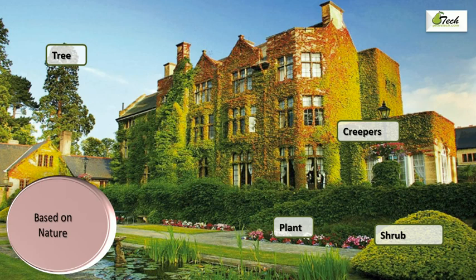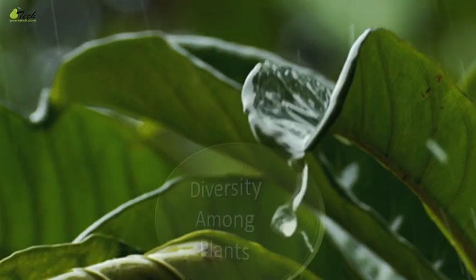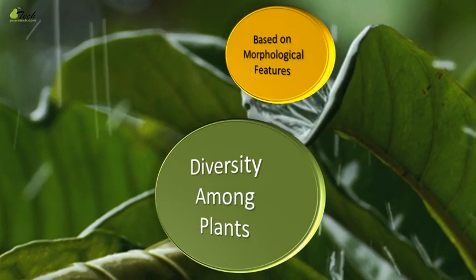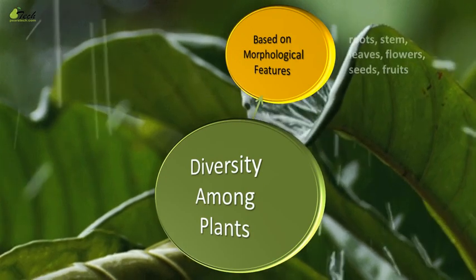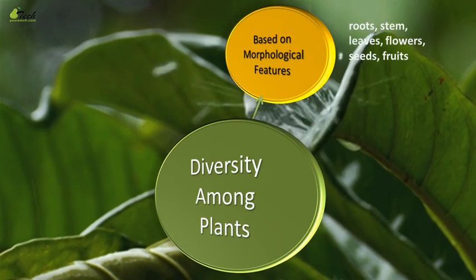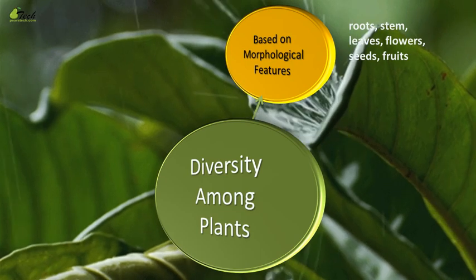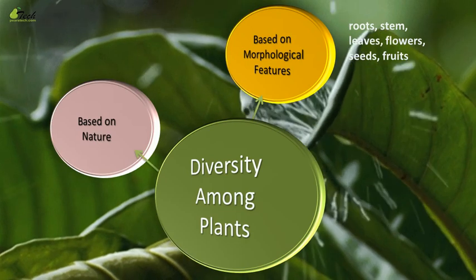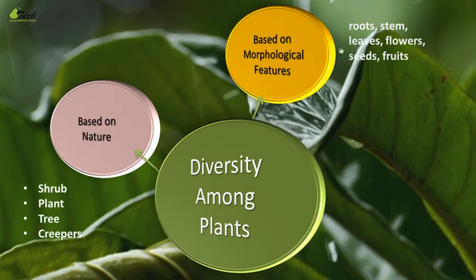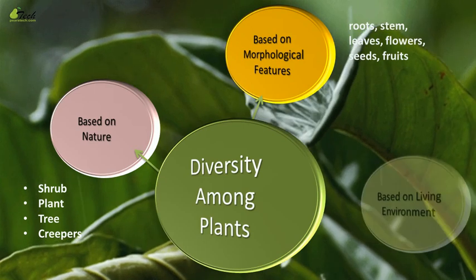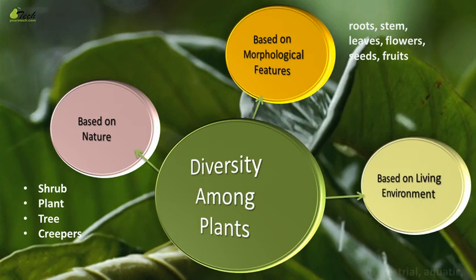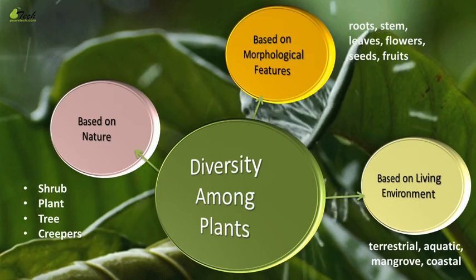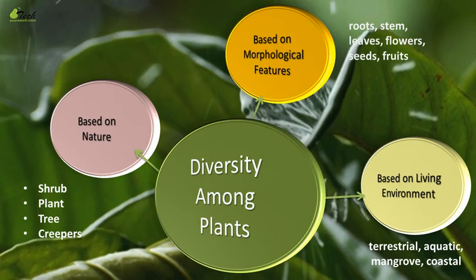Now you know that based on nature you can find the types of plants: plant, shrub, creepers, and trees. We already saw diversity of plants based on morphological features — different kinds of roots, stems, leaves, flowers, seeds, and fruits. Based on nature we have shrub, plant, tree, and creepers. And based on living environment we found terrestrial, aquatic, mangrove, and coastal features.